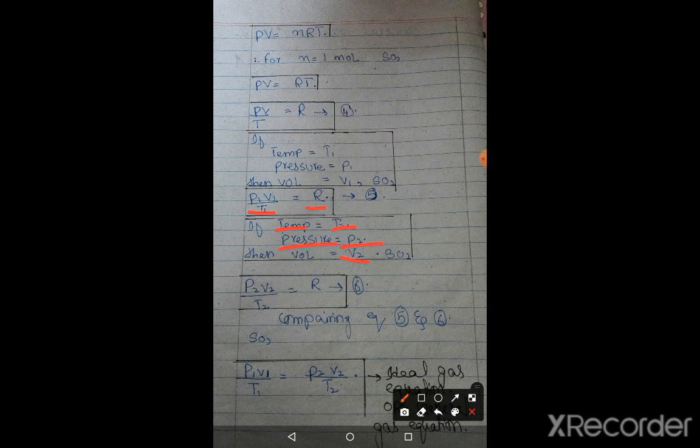So the volume will increase. Friends, let's think: P1V1 upon T1, pressure 1, volume 1, temperature 1, and P2V2 upon temperature 2 is equal to R. This constant value. Again we have two equations, five and six. We can compare them. It's possible that P1V1 upon T1, you can have right side left equal and equal. We're comparing now.